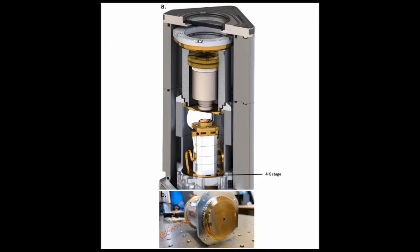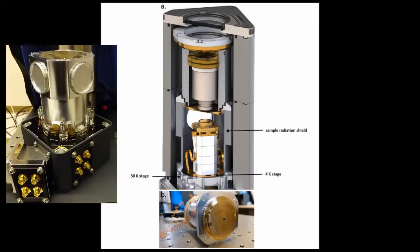The 4K stage mounting region sits within the 30K stage. The sample's radiation shield is supported rigidly and thermally connected to the 30K stage. The radiation shield thermally protects the sample and helps overall temperature stability by lagging wires, fibers, and other loads that may cause heating.